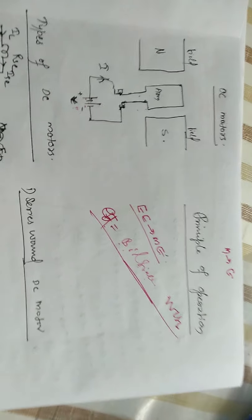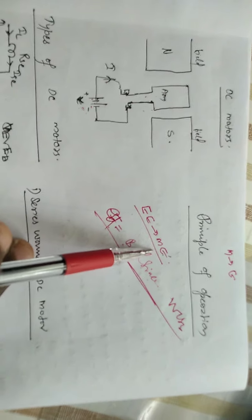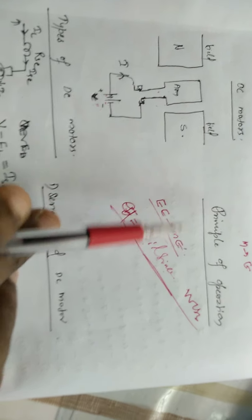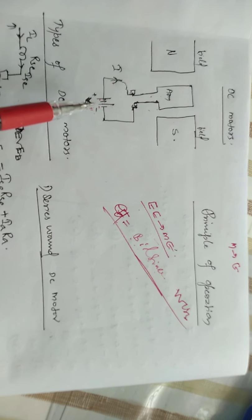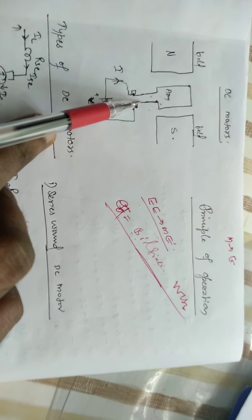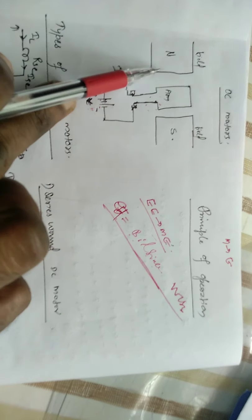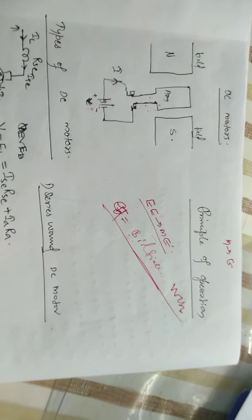This is the working principle of the DC motor. A DC motor is a device which converts electrical energy to mechanical energy. The working principle is Faraday's law of electromagnetic induction. We provide electrical energy to the armature, which acts as a current-carrying conductor in a magnetic field, causing it to rotate and develop mechanical force.